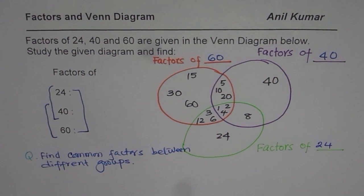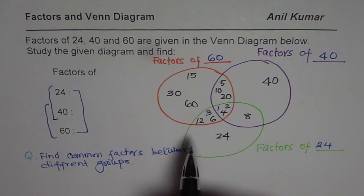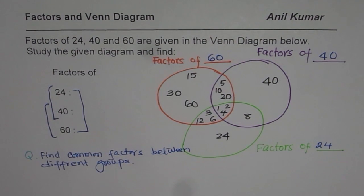Since we know that each circle here in this Venn diagram corresponds to factors of one of these groups, one of these numbers, we could find very easily from the numbers themselves.